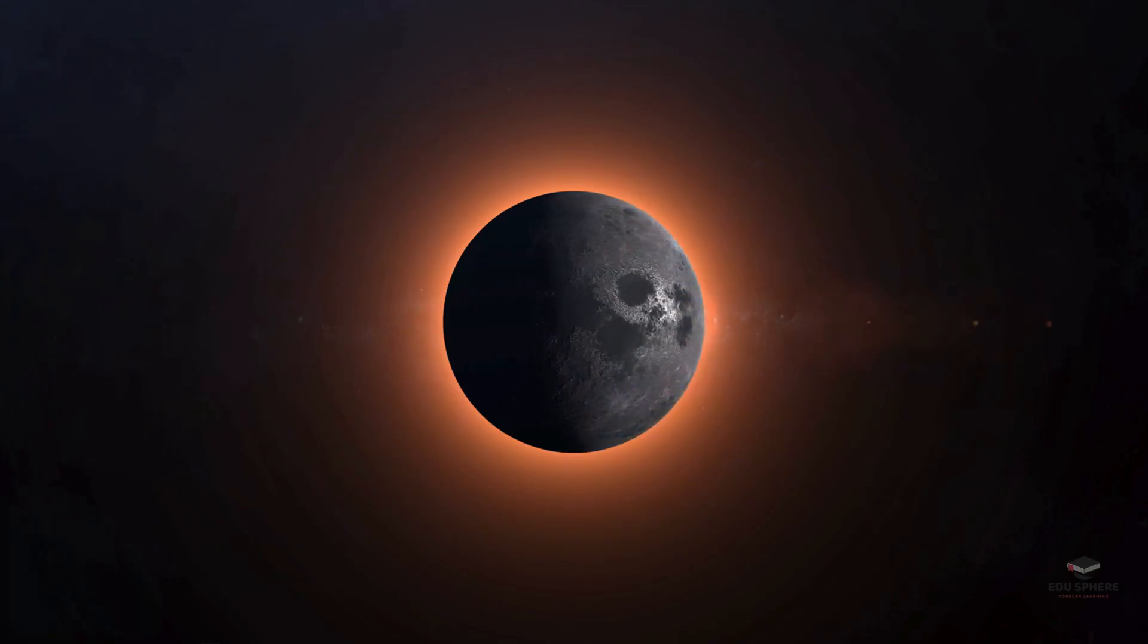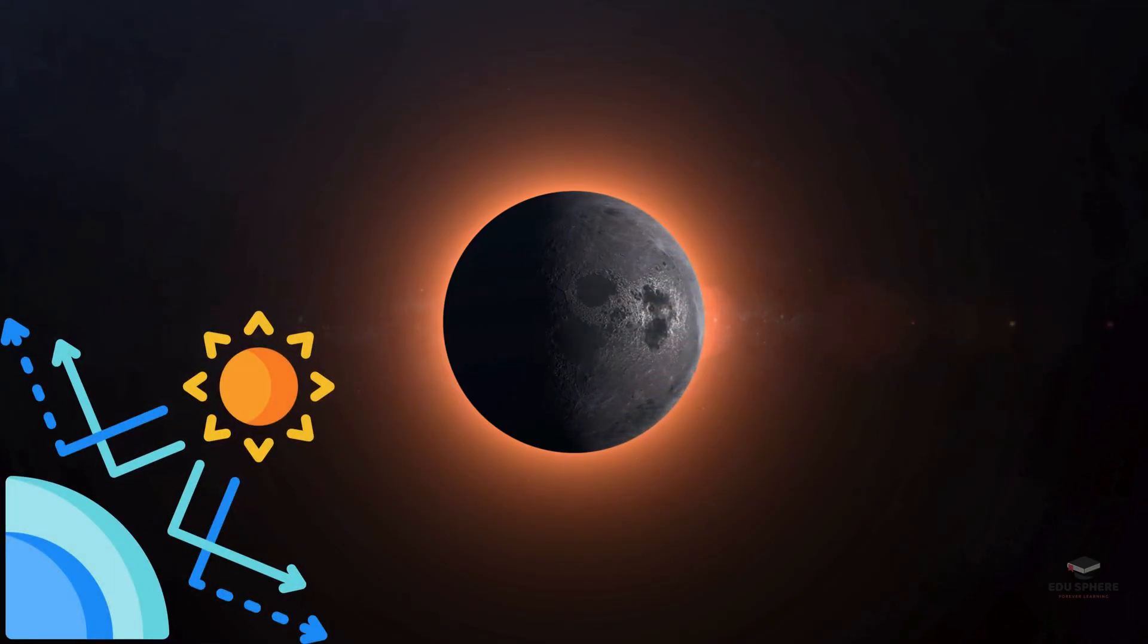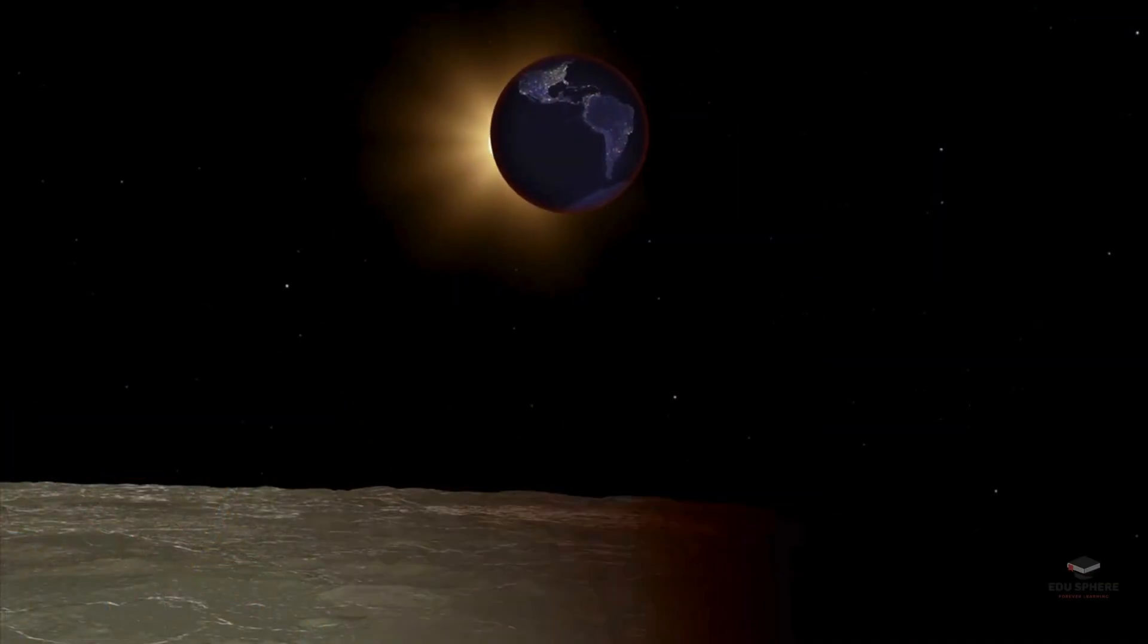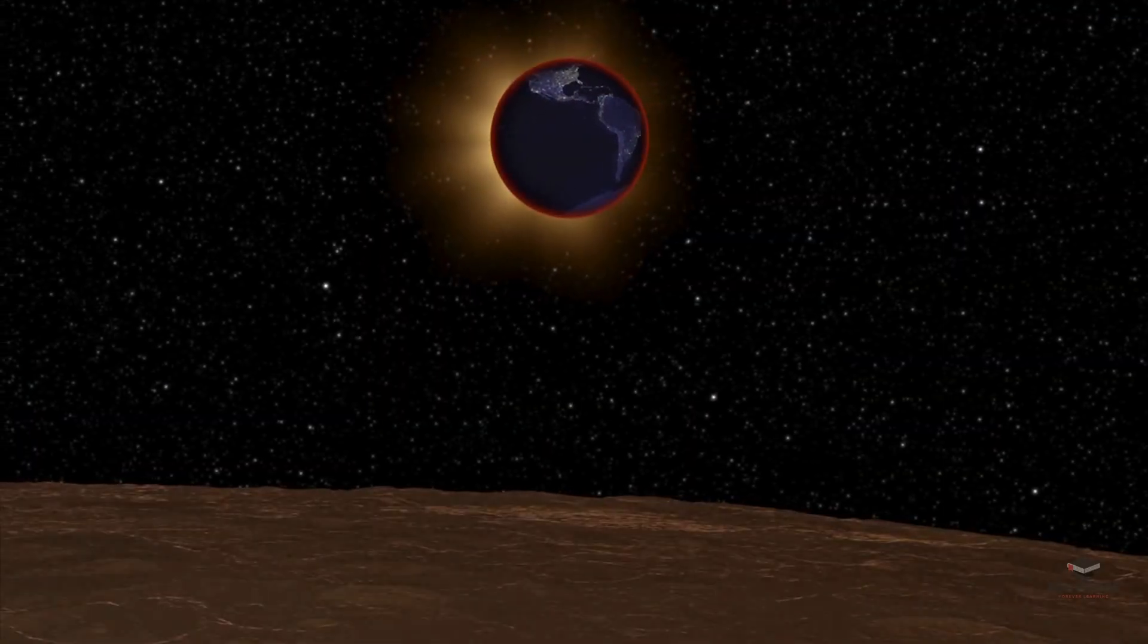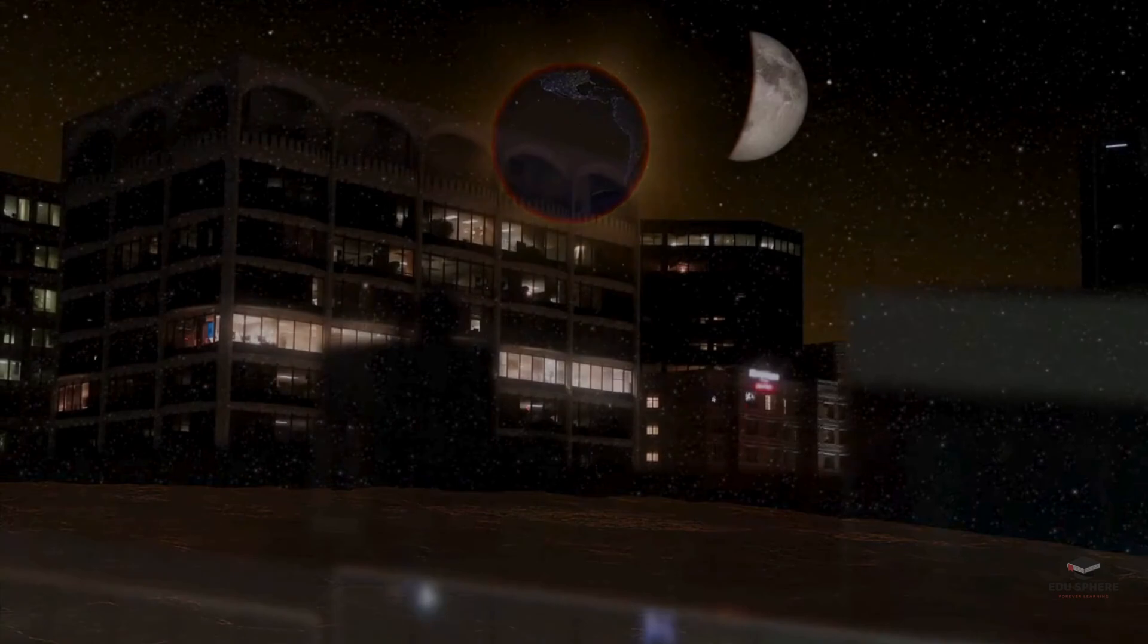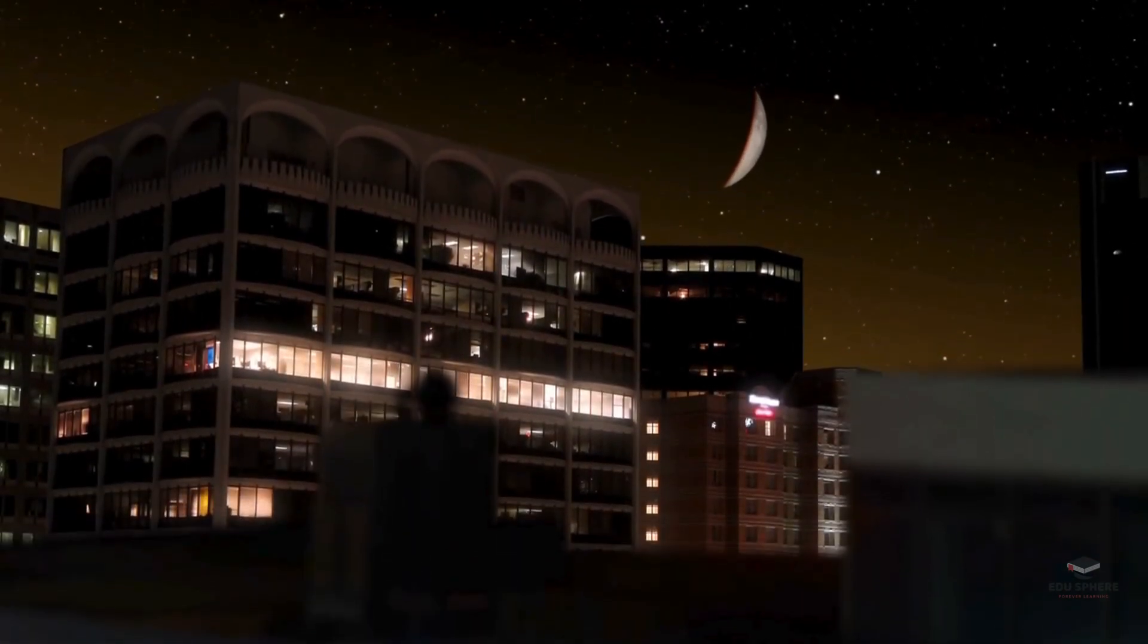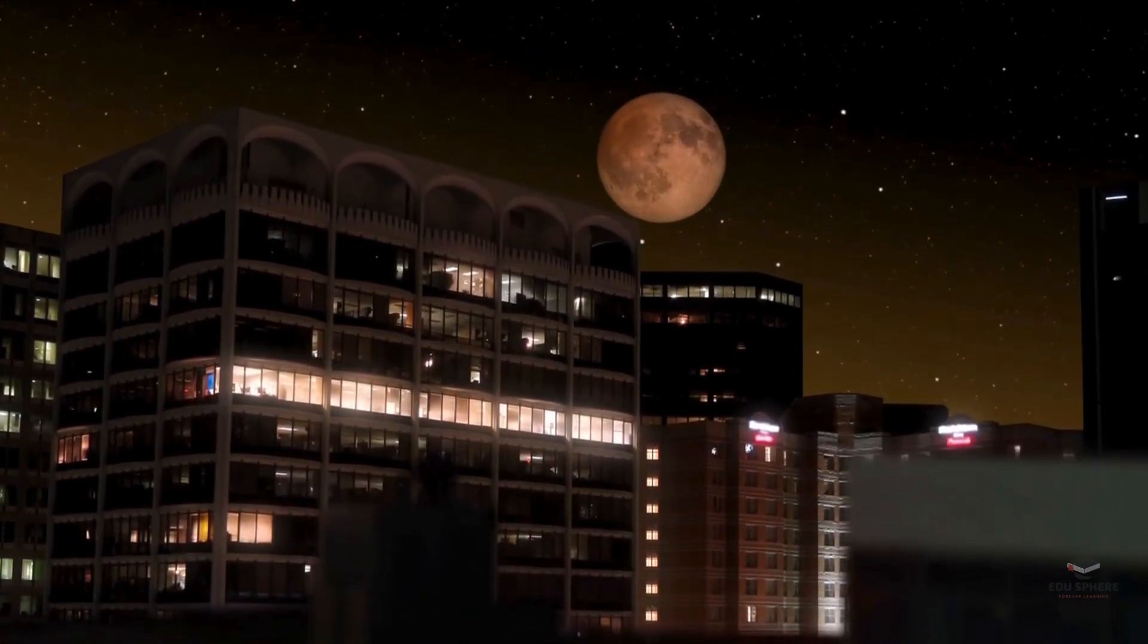In the earth's atmosphere, air molecules scatter most of the blue light, leaving the red wavelengths to light up the moon's surface. This process gives the moon its distinctive red glow, creating the striking appearance of a blood moon in the night sky.